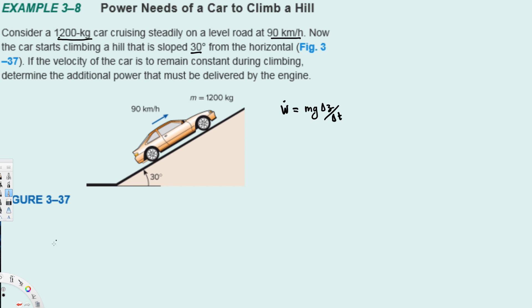But delta z over delta t—these two things can be replaced by velocity, because we know that distance over time is velocity. So this can be replaced by v vertical.